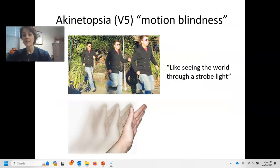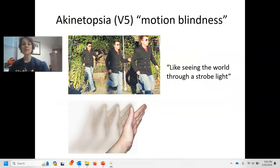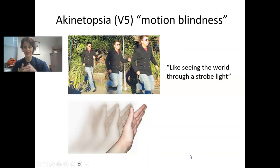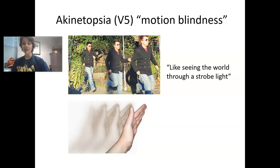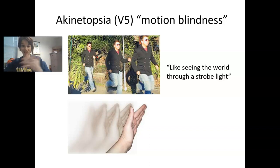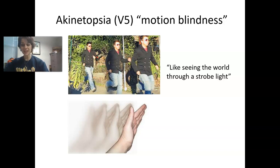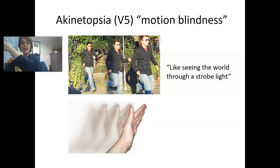We're going to start with achromatopsia. Achromatopsia is often the result of brain damage to cortical area V5 — that extrastriate cortex area V5. People that have this disorder are effectively motion blind, so they do not see a smooth change in an object's visual position over time, which is what motion is. Somebody with achromatopsia will not see that motion smoothly — they will kind of see the world through a strobe light.